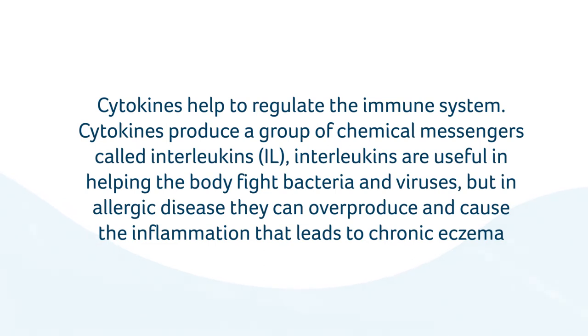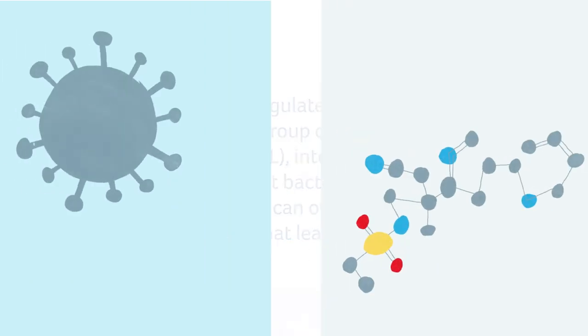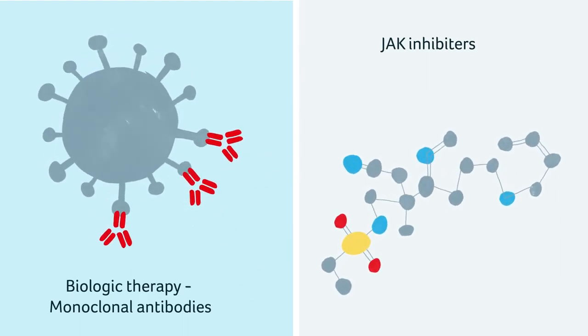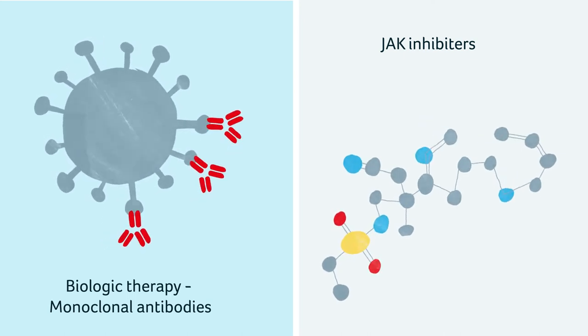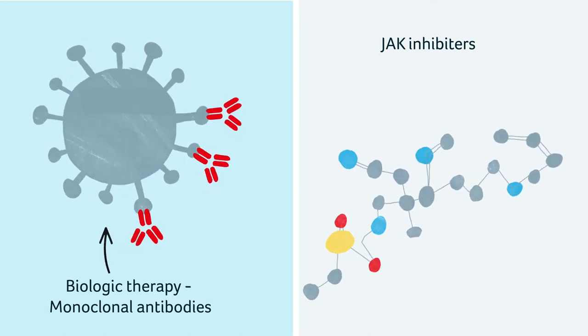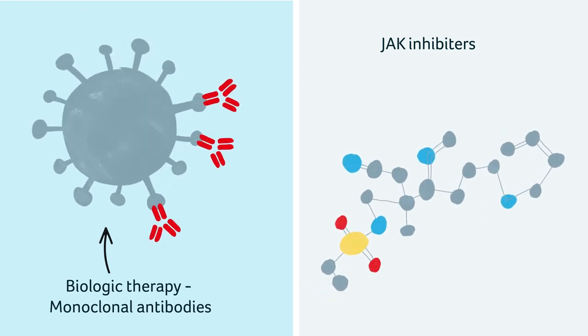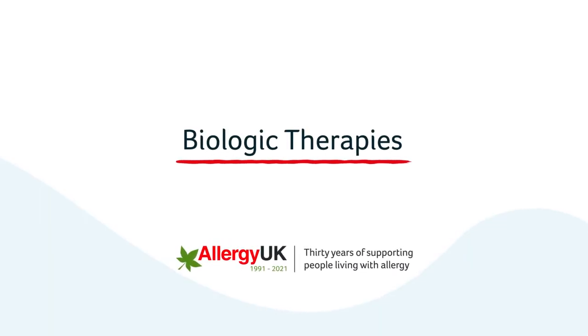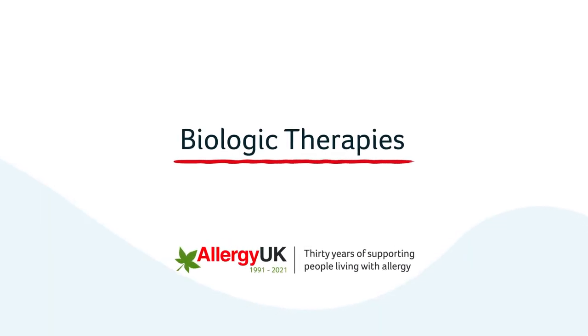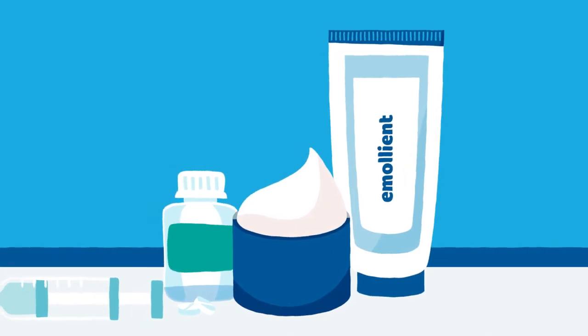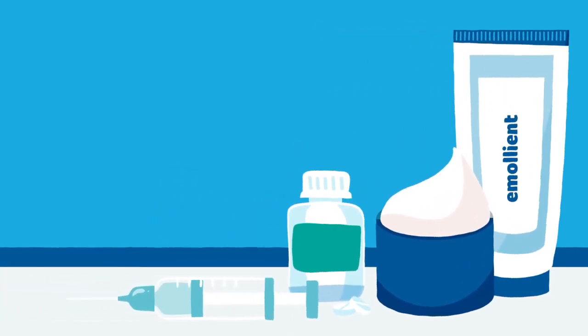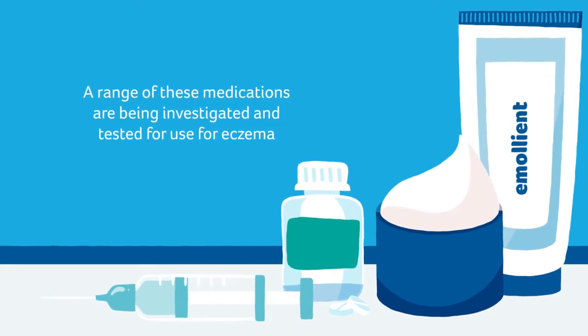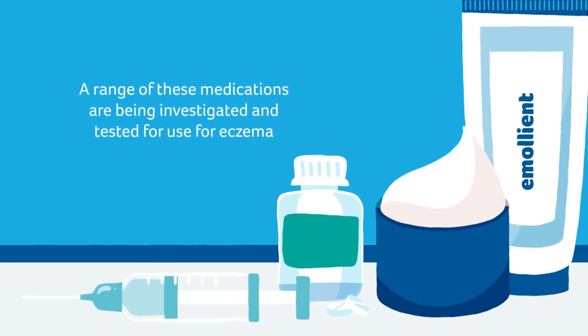There are currently two types of biologic therapies that are showing promising results in the treatment of atopic eczema. These are biologic therapy monoclonal antibodies (mAbs) and JAK inhibitors. A limited number of biologic therapies are currently available for the treatment of eczema. However, a range of these types of medications, including those administered by injection, tablets, and topical creams, are currently in a research trial stage and are going through rigorous clinical testing for use for eczema patients to see if they are safe and can improve or control symptoms.